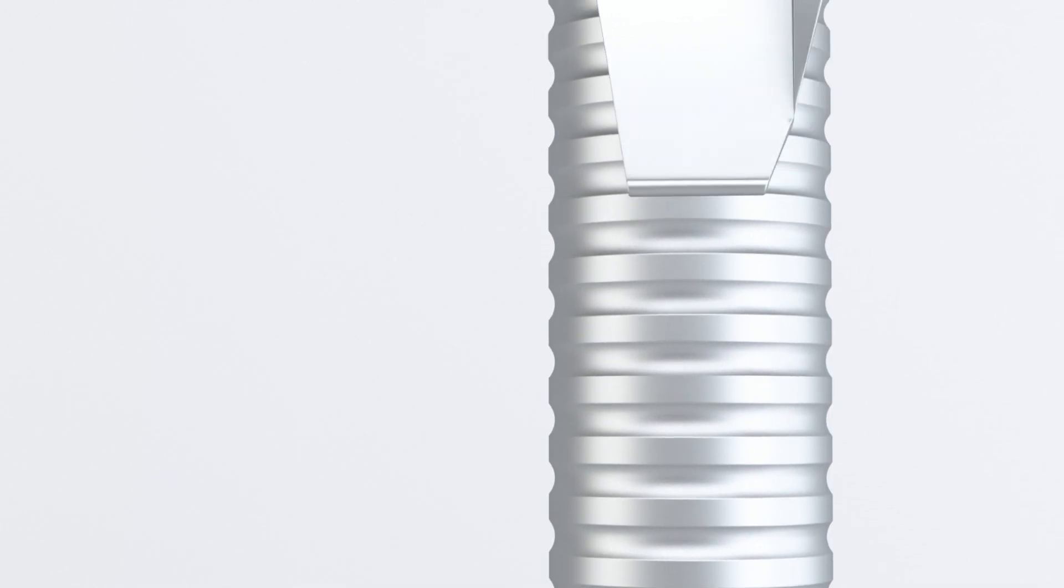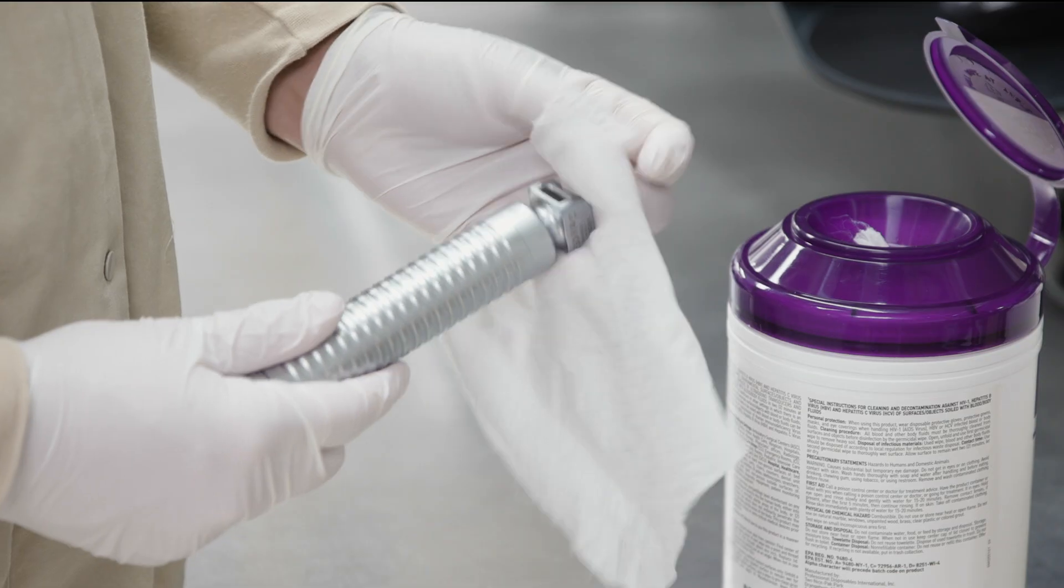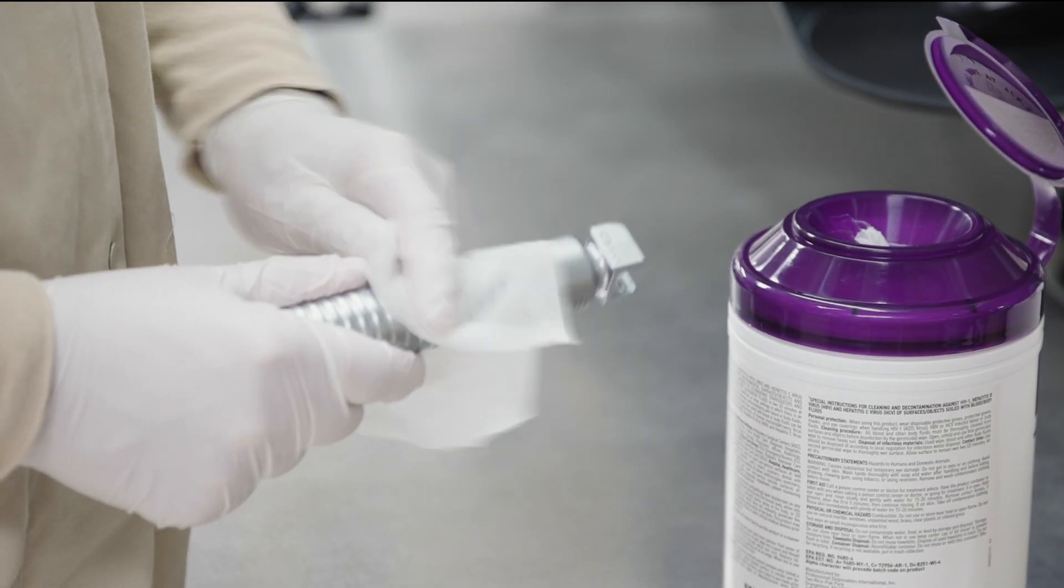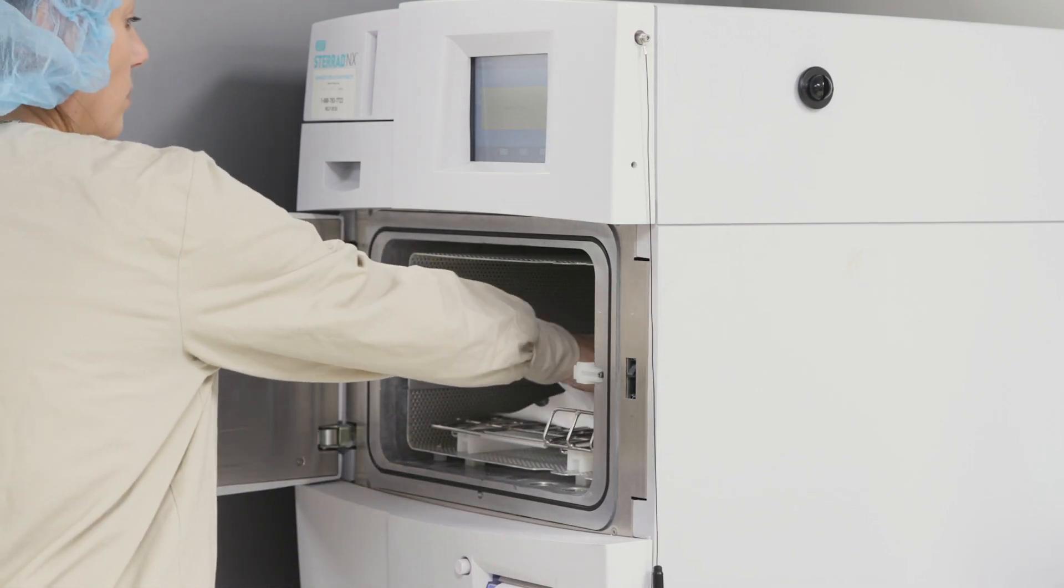The exclusive design of the EasyClean handle allows it to be reprocessed in a number of validated ways. This includes low-level surface disinfection to sterilization in hydrogen peroxide sterilizers without any disassembly.